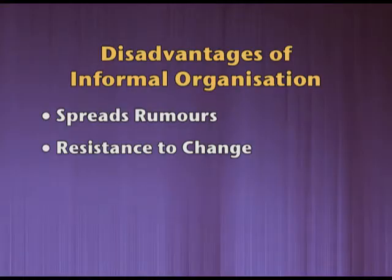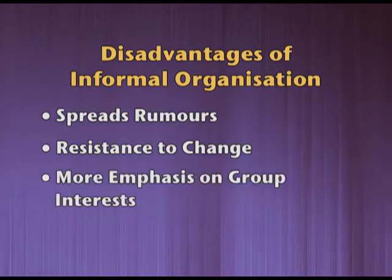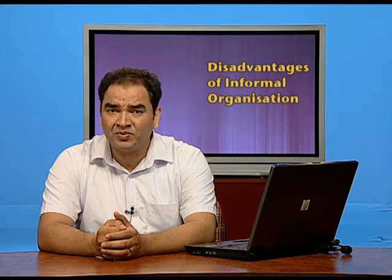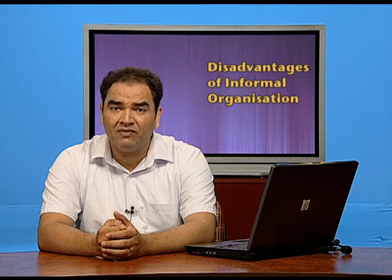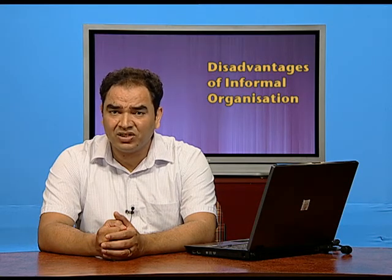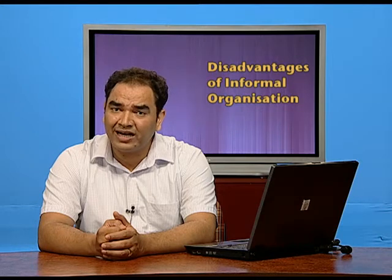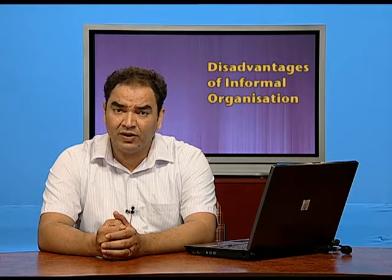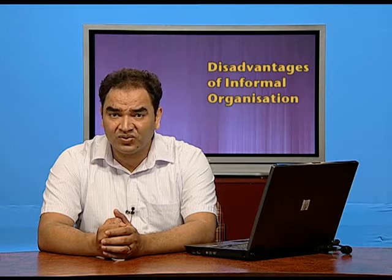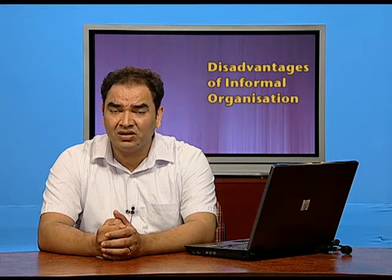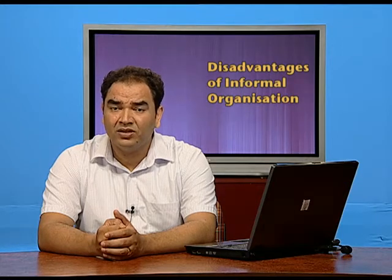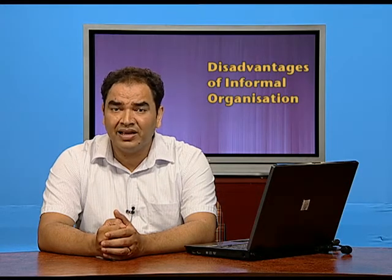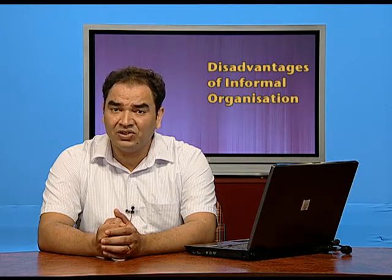The third disadvantage of informal organization is more emphasis on group interests. Within the formal organization, informal groups are formed, and once the groups are formed, they get powerful. If something is happening in the organization and it is not in the favor of that group, the group won't let it happen. They will go on strike, threatening the management that if a decision is taken against them, they will strike, which may hamper the production system and ultimately adversely affect the achievement of organizational goals.